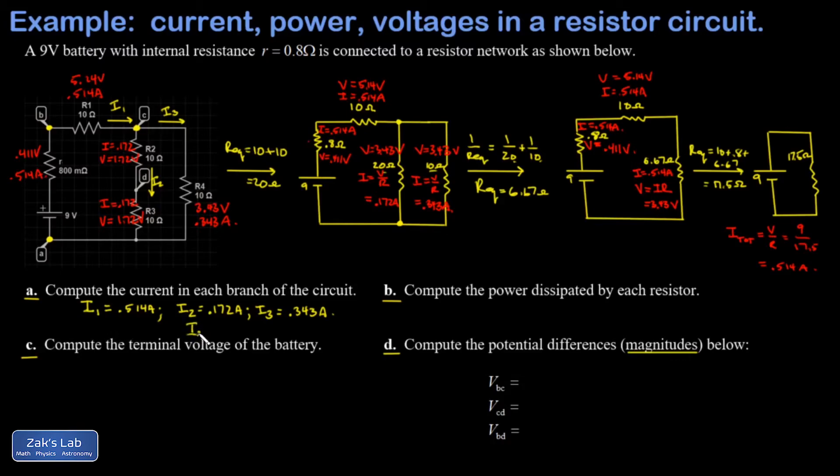When I look at I2 plus I3, I have 0.172 amps plus 0.343 amps. And that gives me 0.515 amps, which is only slightly different than I1 due to rounding errors. So I'm not concerned about that.